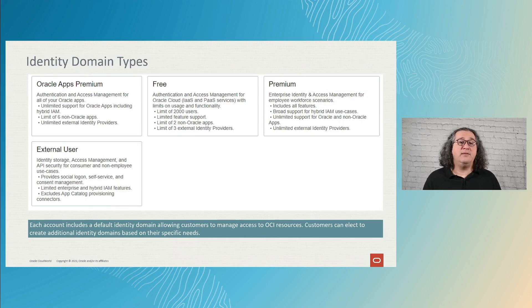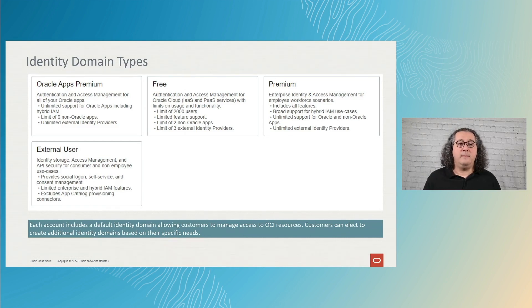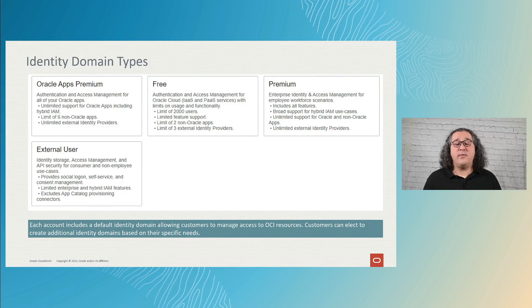If you need more limits, like more than 2000 users, or features that are not included, it is possible to change the domain to another type. Many Oracle applications provision an identity domain for their users and include everything you need with it. If you need to use more advanced resources to enhance authentication and authorization, or mix them with other environments, that is when you need to use an identity domain of the Oracle Apps Premium type.